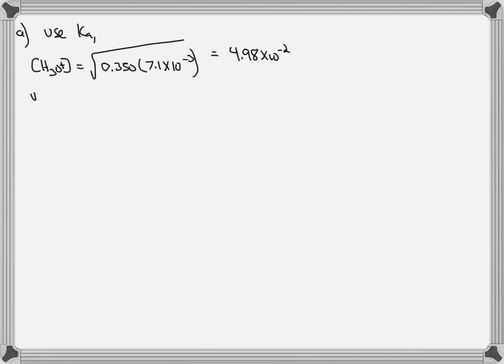It turns out that this is greater than 5% of the original 0.350, so we end up using the quadratic formula anyway, where Ka, 7.1 times 10 to the negative 3, is equal to the hydronium concentration squared, divided by the concentration of the weak acid minus the hydronium concentration.